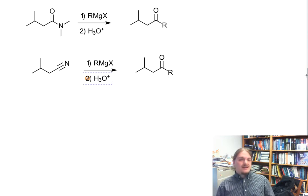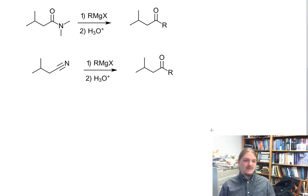However, you can also make ketones from tertiary amides and nitriles using Grignard reagents. This ends my summary of making ketones from carboxylic acid derivatives, and the entire video series on hydrogen and carbon nucleophiles. Thank you for watching.